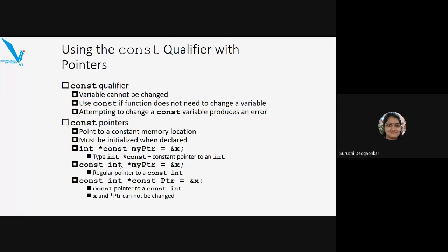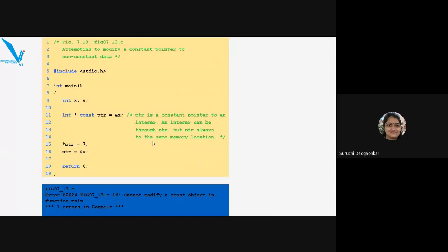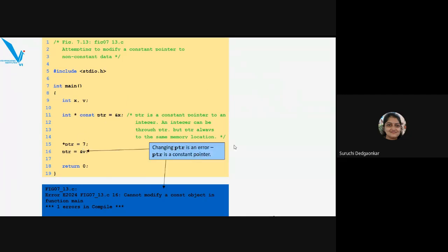In a const pointer example: there are two integers x and v. We have a constant pointer PTR storing &x. We can modify *PTR = 7, which changes x to 7. But saying PTR = &v will produce an error, because PTR is a constant pointer — it must always point to x and cannot be asked to point to any other variable.